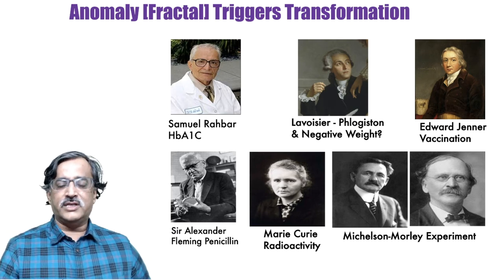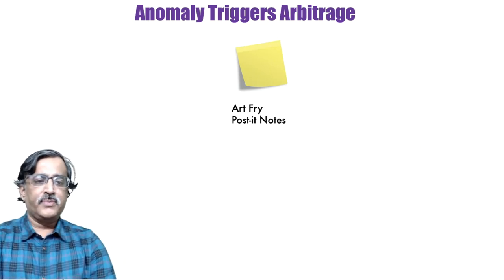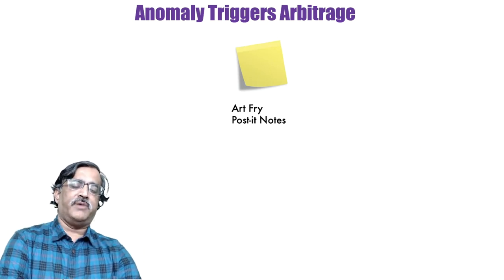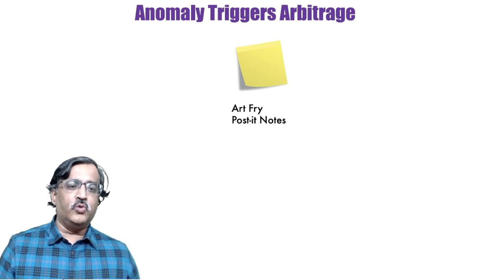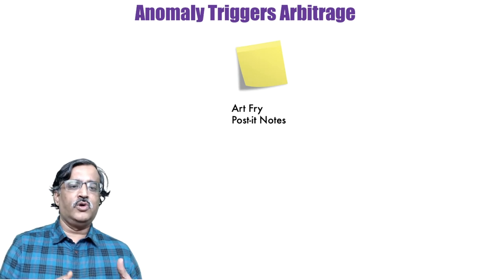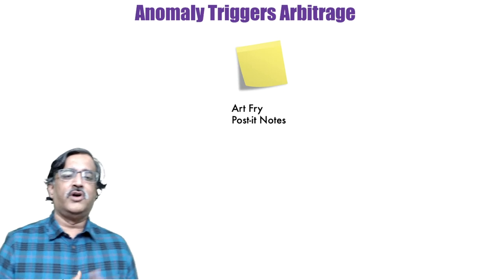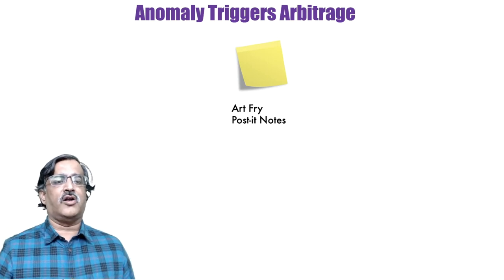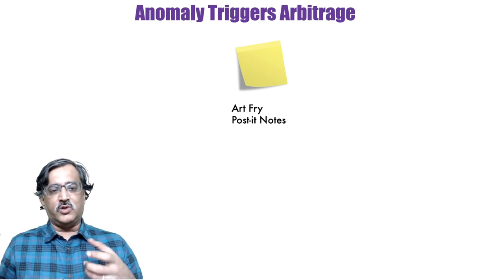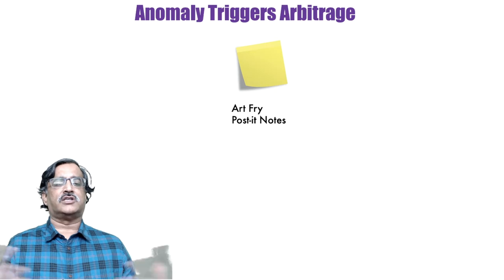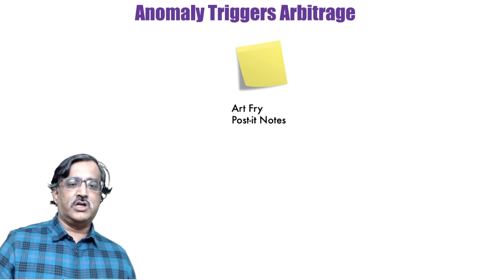Spotting anomalies is crucial. There's another kind of anomaly I've noticed, and the primary example is Art Frey at 3M. He notices a weak glue — glues are supposed to stick strongly — so a weak glue which doesn't stick properly is an anomaly in the glue world. But he arbitrages that to the notes he was putting in his Bible, which were constantly falling off, and that led to the groundbreaking invention of Post-it notes.